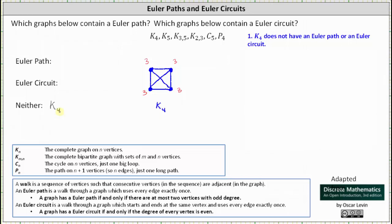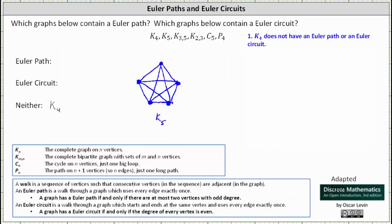Next, we have K₅, which is a complete graph on five vertices, which indicates each vertex will have degree four. Let's go ahead and sketch the graph. Checking the vertices just to be sure, each vertex has degree four. Because all vertices have an even degree, K₅ has an Euler path and an Euler circuit. We list K₅ under both Euler path and Euler circuit.